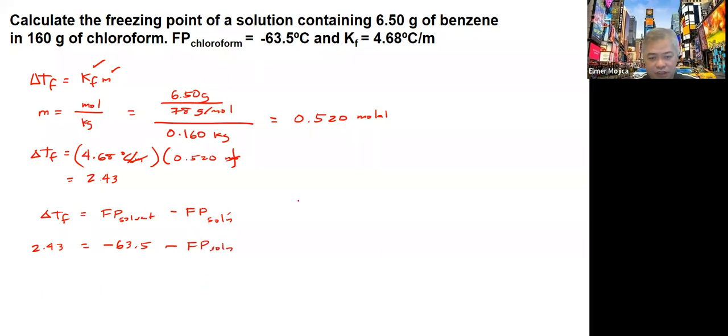So rearranging this, we can put the freezing point of the solution on one side, and we have negative 63.5 minus 2.43, giving us around negative 65.9. So this is much lower than this one, so this is the new freezing point of the solution.